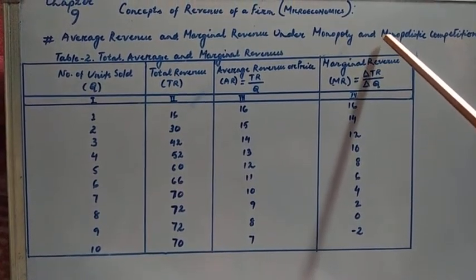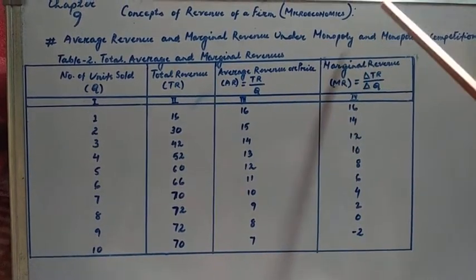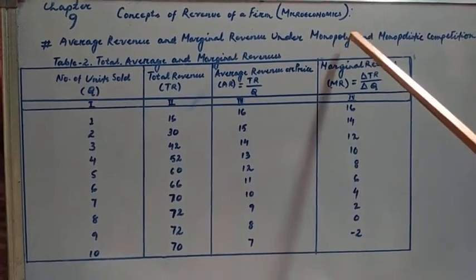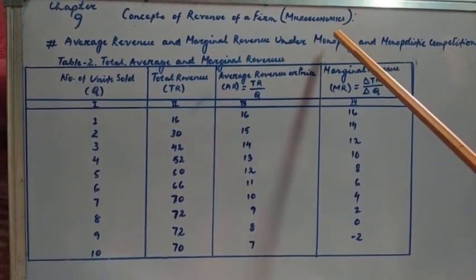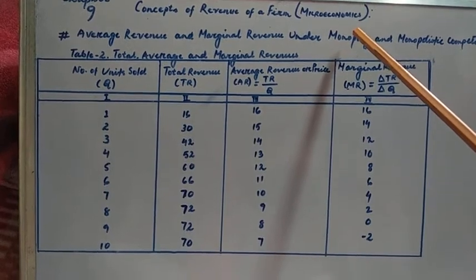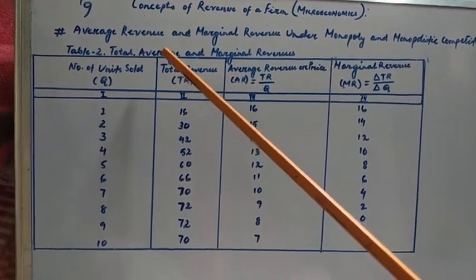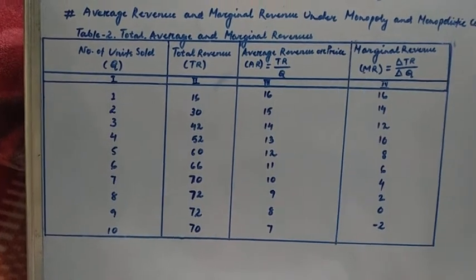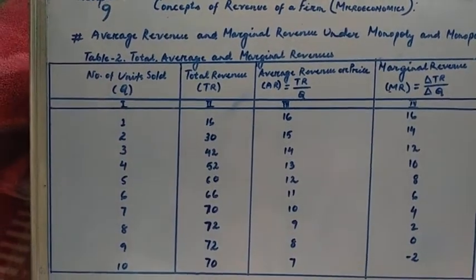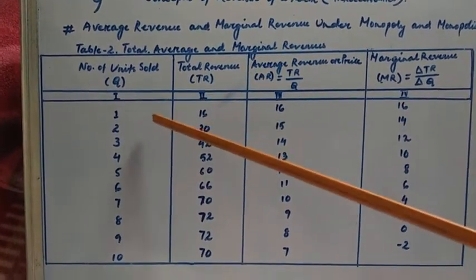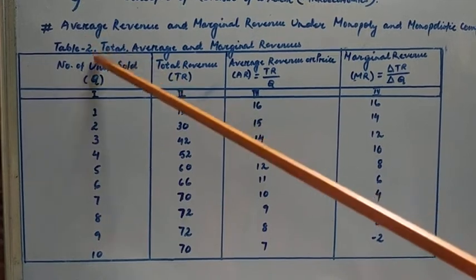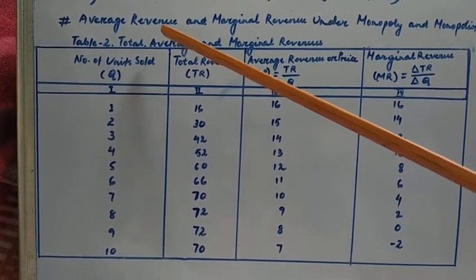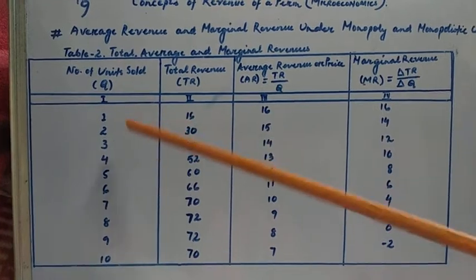In oligopoly, small firms compete with each other; in monopolistic competition, large firms compete; and in monopoly, a single firm controls the whole market. We shall examine average revenue and marginal revenue under imperfect competition. The concepts of total, average, and marginal revenue are represented in table number two, where all three are explained using a tabular form.